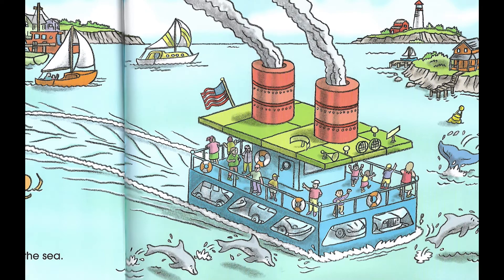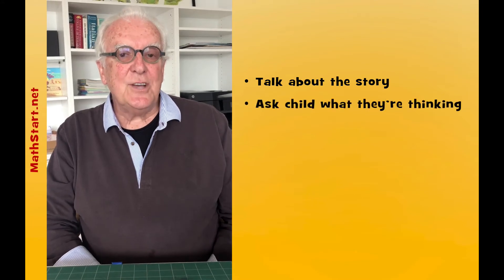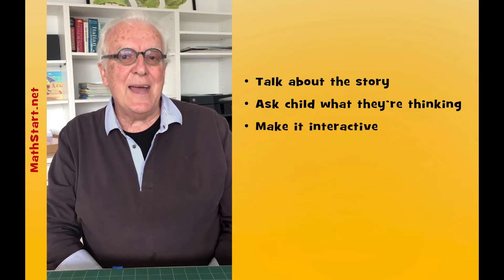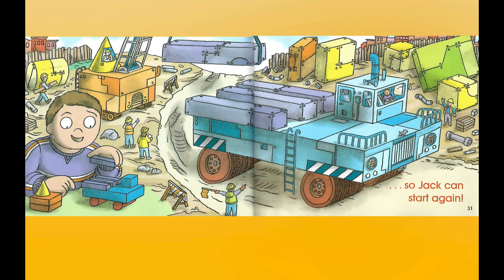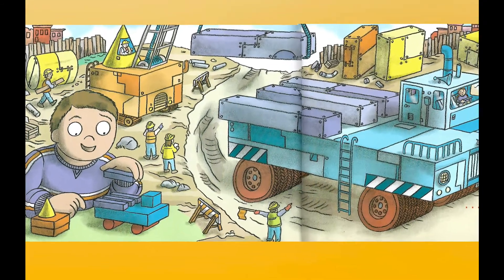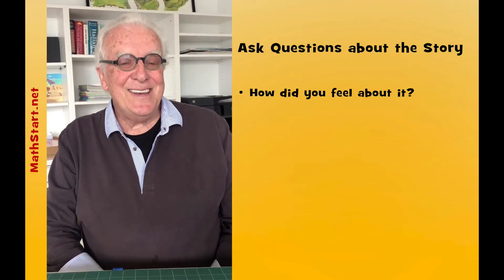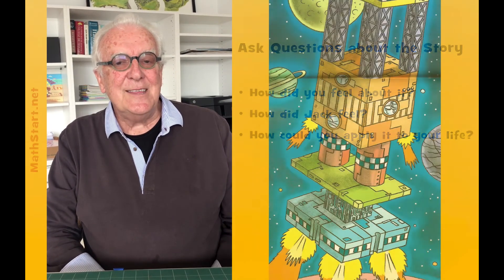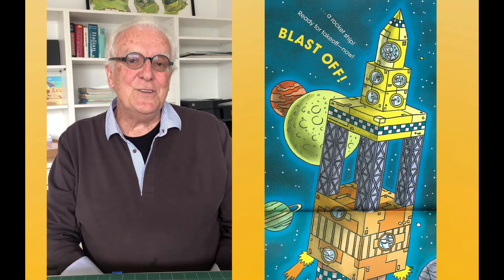As you move through the story, it's good to every so often talk about the story, bring up ideas, and ask the child what they're thinking, what they might predict is going to happen next. Make it interactive. Make it fun. When you get to the end of the story, you'll see Jack is ready to start building all over again. You need to start asking a few questions: How did you feel about it? How did Jack feel? Could you apply it to your life? Have you ever seen anything like this yourself? And then think about that really most important question of all.